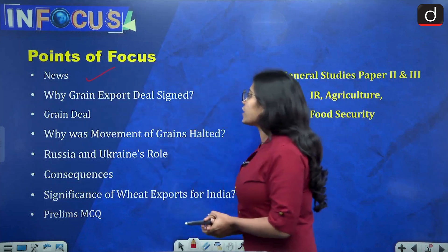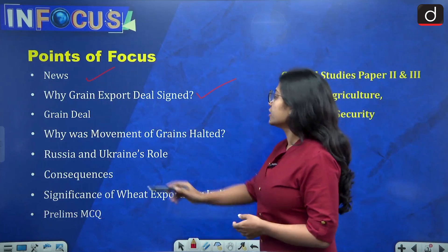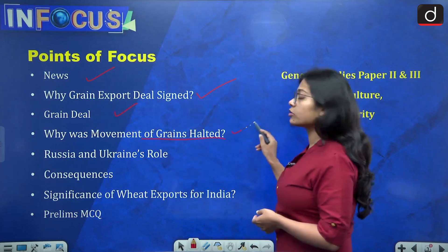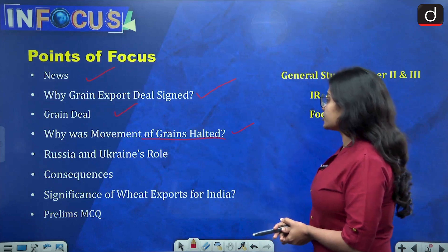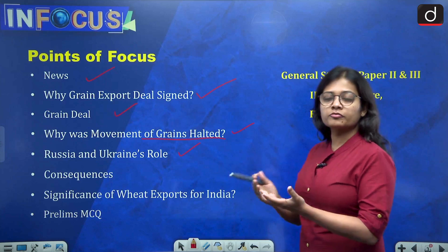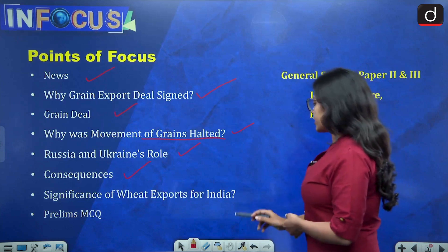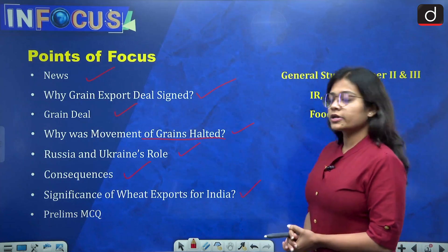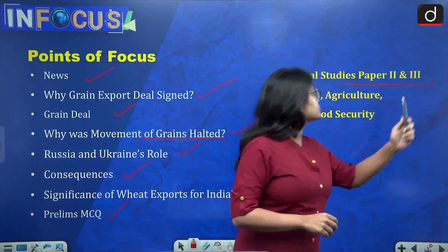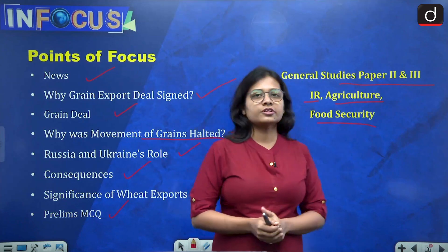we will be looking at the news. Then why grain export deal has been signed by both the countries separately. Then what is the grain deal. Why was movement of grains halted or stopped after the war. Russia and Ukraine's role — why are they so important when it comes to the export of wheat or grain. Then the consequences and the significance of wheat exports for India. In the end, we will be looking at a prelims MCQ. This topic is of relevance from General Studies Paper 2 and Paper 3, that is international relations, agriculture and food security.